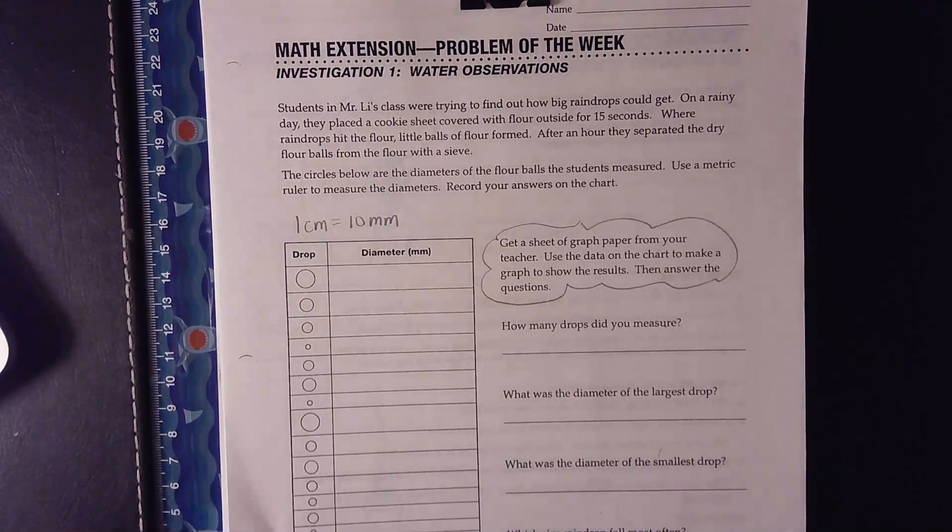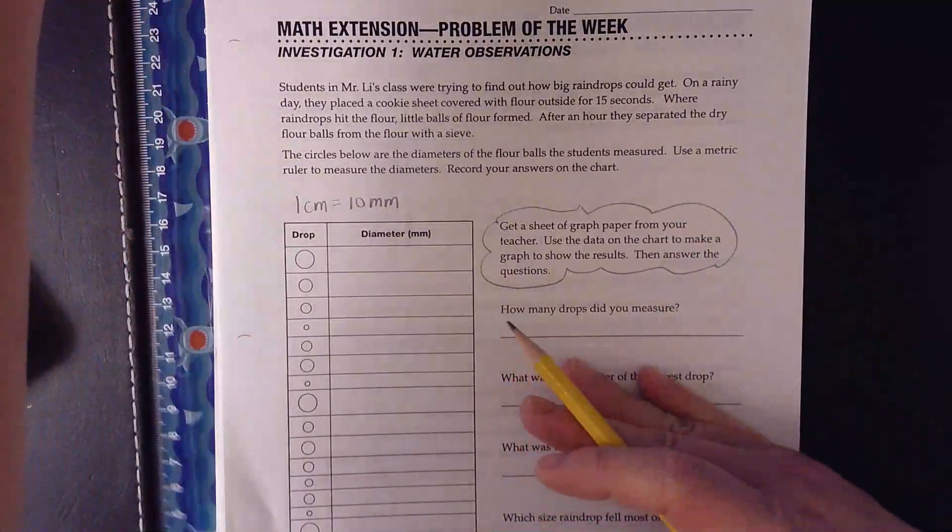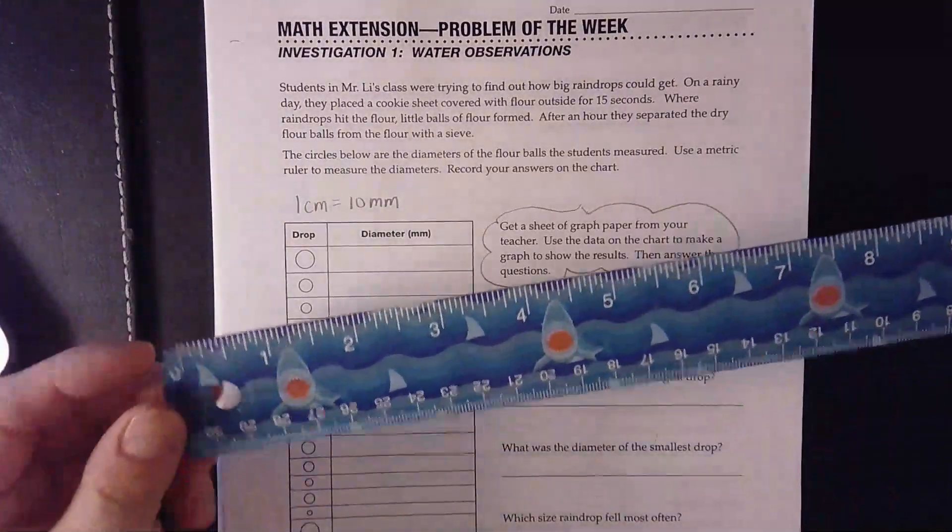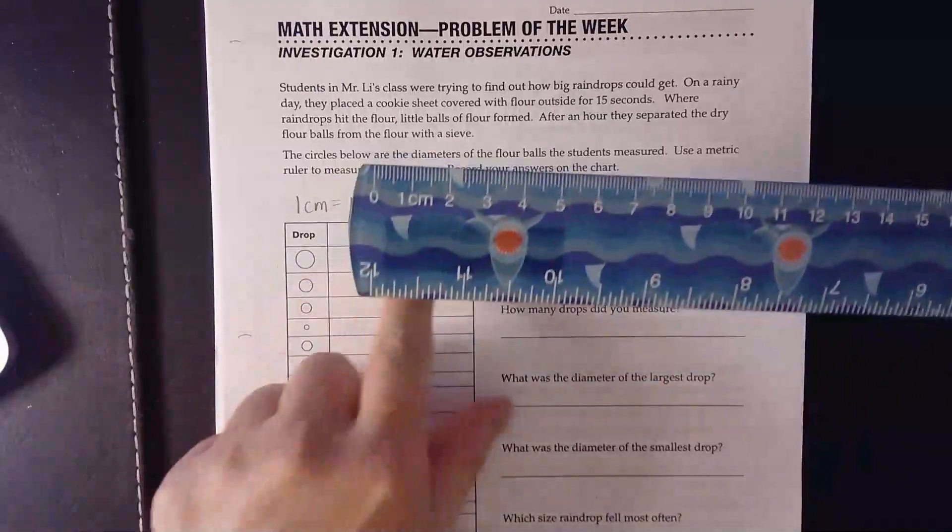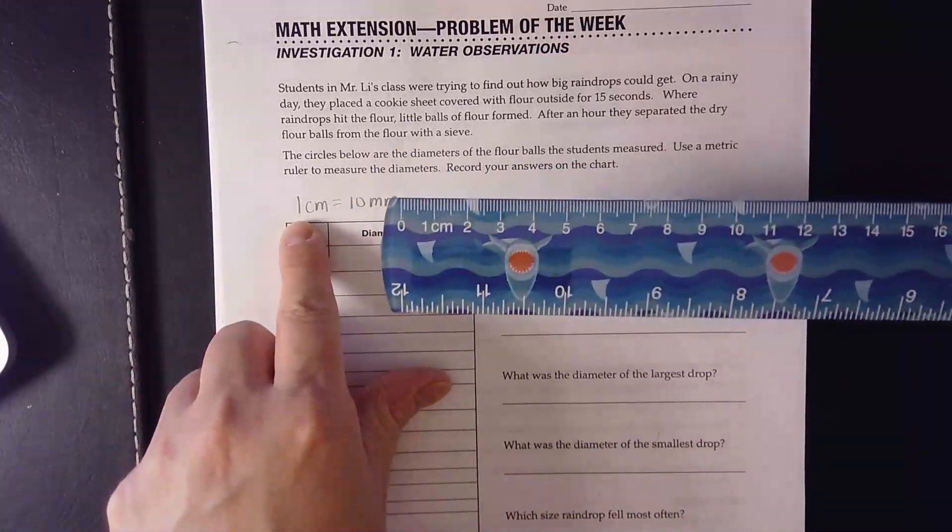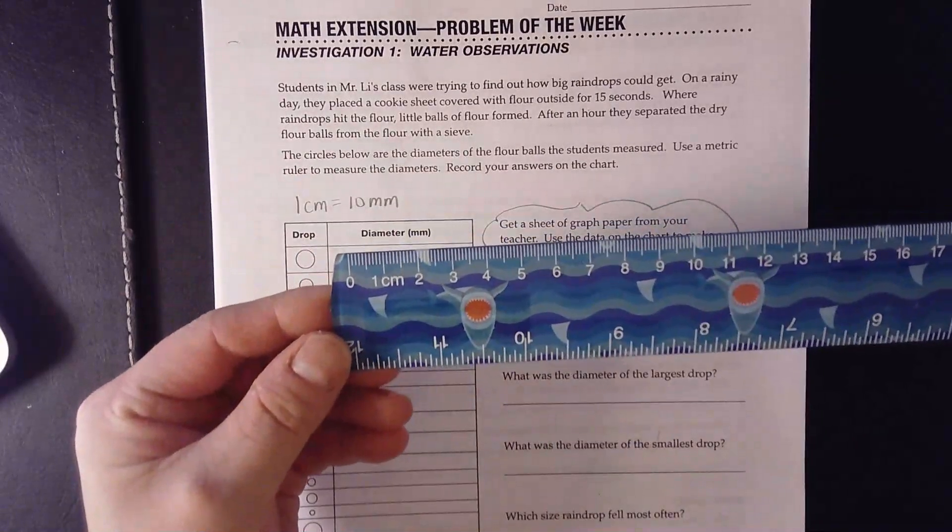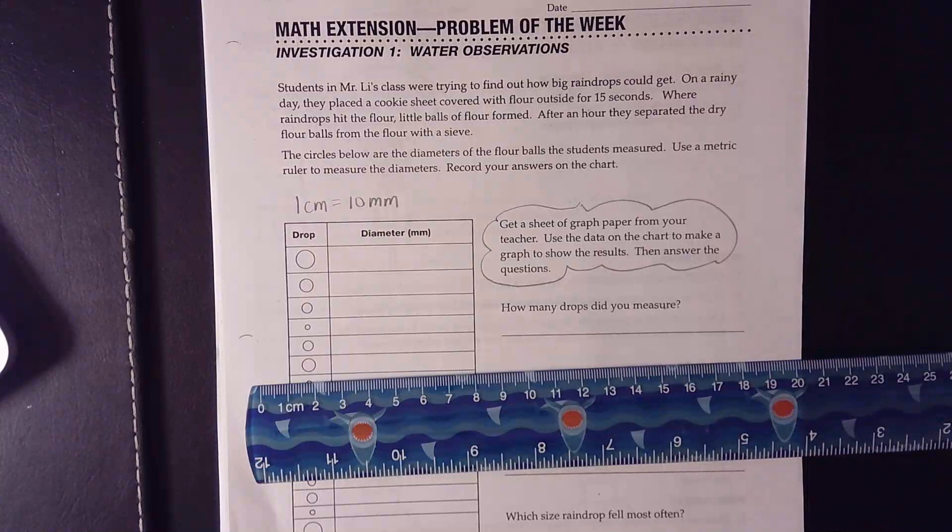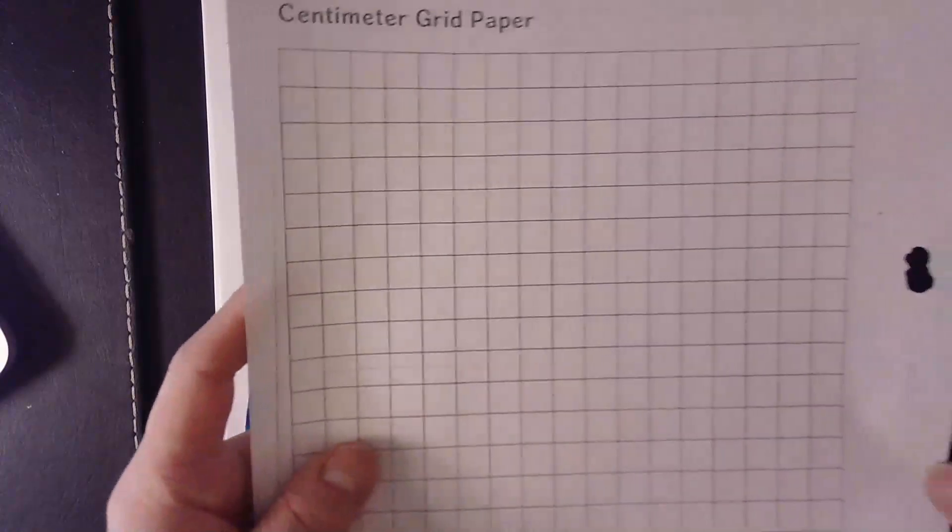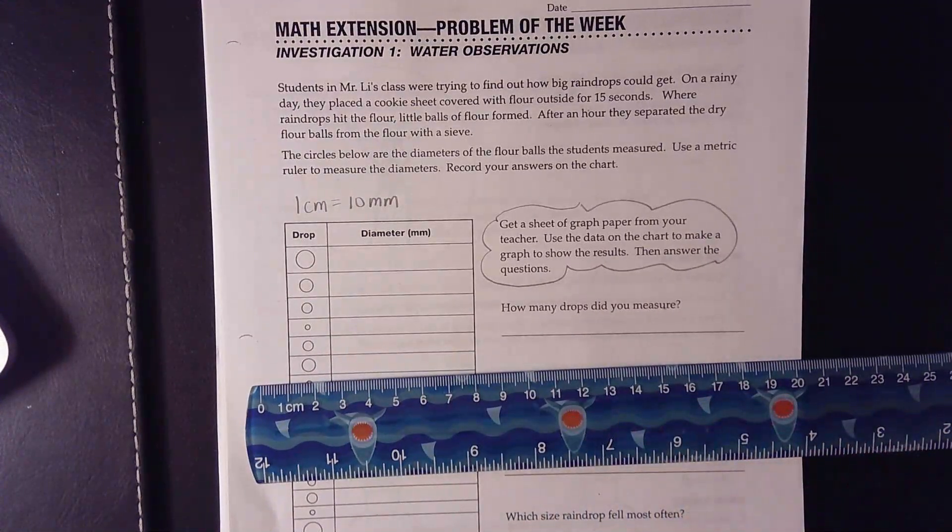What we're going to be working on today is the math extension problem of the week. In order to do this lesson successfully, you're going to need a few things. Number one, you're going to need a ruler. The ruler needs to have centimeters because we are going to be looking at the millimeters. And the conversion is one centimeter is equal to 10 millimeters. So if you happen to have a ruler, you want to make sure you have that so you're able to measure accurately. Another thing you want to make sure that you have is a piece of graph paper. Now, you can go in the back of your booklet, your math booklet, and you can take out the centimeter grid paper, and that would serve just fine as a graph. Or you can make your own graph on just regular white paper. All right, so let's get started.